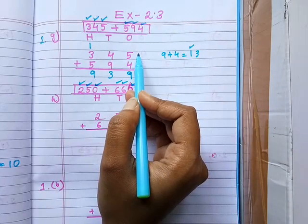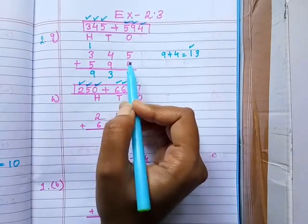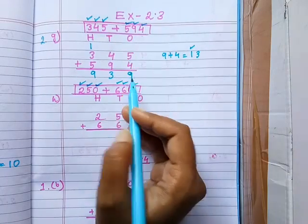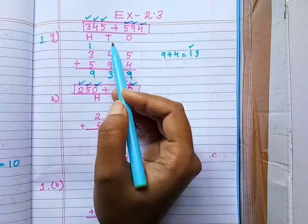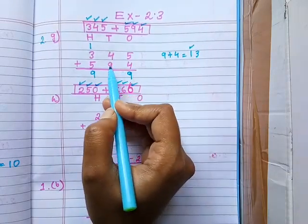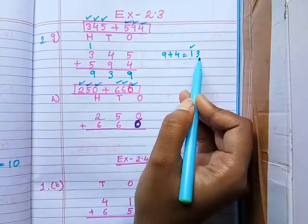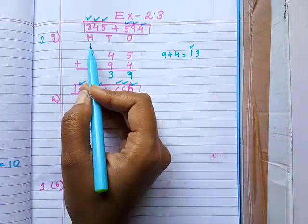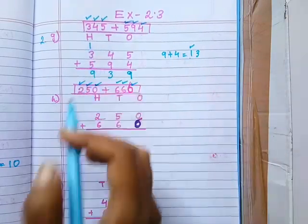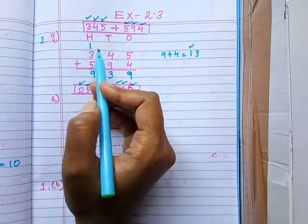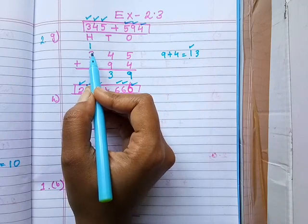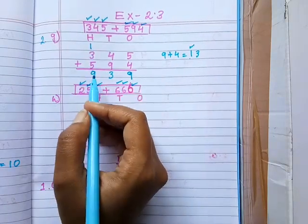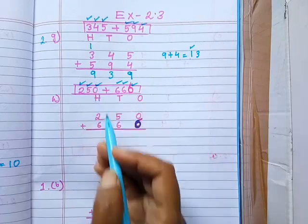Then you have to add these two numbers. First add the 1's place digits: 4 plus 5 equals 9. Add the 10's place digits: 9 plus 4 equals 13. Write down 3 in 10's place and 1 in 100's place. Next add the 100's place digits: 5 plus 3 is 8, and 8 plus 1 is 9. So our answer is 939.